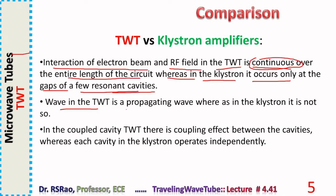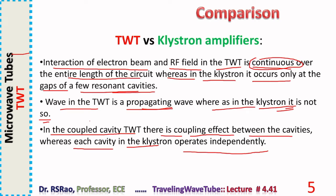The wave in a TWT is a propagating wave, whereas in a Klystron it is more like a standing wave. In a coupled-cavity TWT there is coupling between cavities, whereas each cavity in a Klystron operates independently.